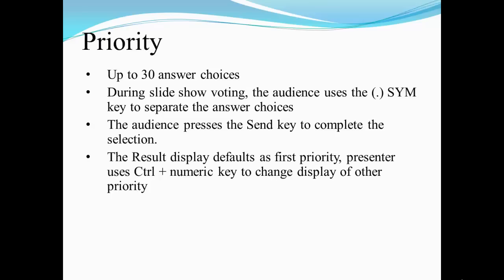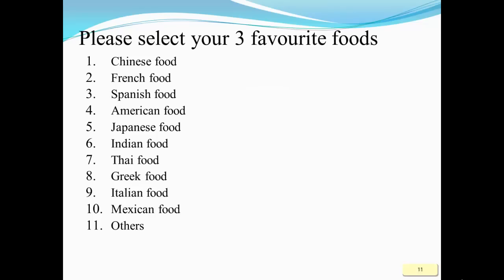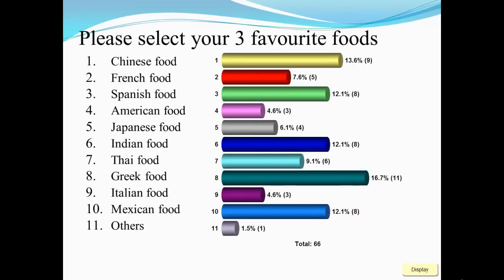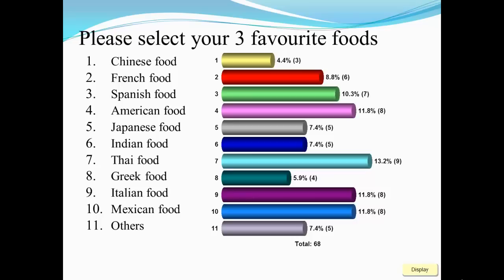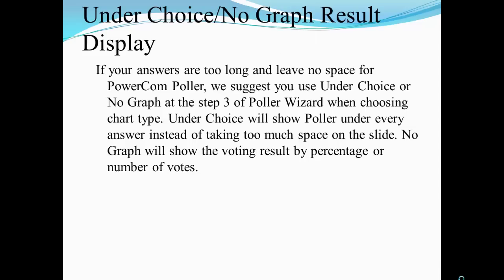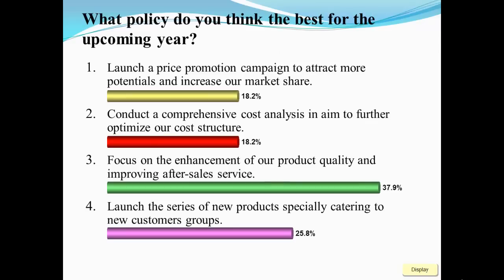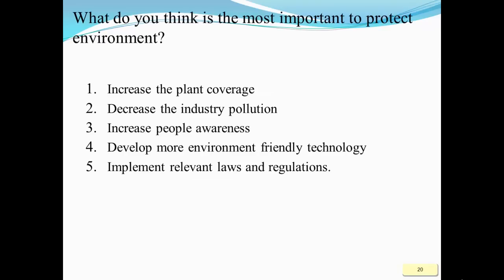We can do priority questions, where we ask people to enter items in order of priority — first choice, second choice, and third choice. Results can be displayed as charts under text, or with no chart at all, just data.